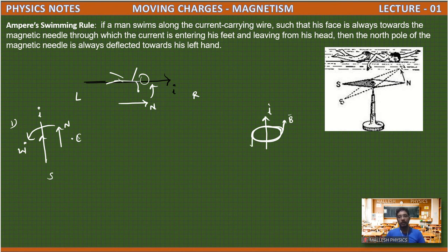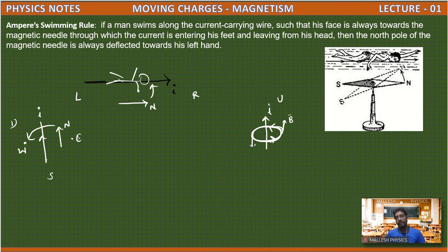If you see from the bottom, the direction is clockwise; if you see from the top, the direction is anticlockwise. So we can find the direction relatively — it depends on which side you are viewing from. By using Ampere's swimming rule we can find this clearly, just by imagining the deflection of the north pole of the needle.